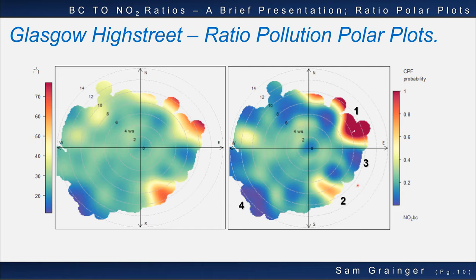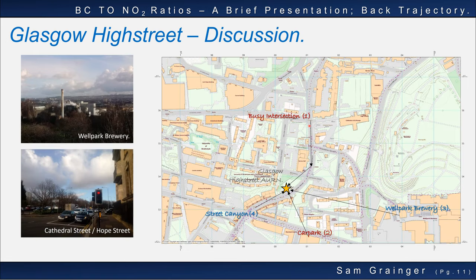Besides hotspots, there were also two cold spots where concentrations of BC were high compared to nitrogen species. These areas had a probability of high ratios at the 75th percentile approaching 0%. Cold spot 3 had high wind speeds from the south to southeast, which led to concentrations of around 20 to 1 NO2 to BC. Cold spot 4 had high wind speeds from the southwest, which led to concentrations of 10 to 1 NO2 to BC. Two features had a high relative concentration of BC to NO2, whilst the other two features had low ratios — i.e. cold spots.